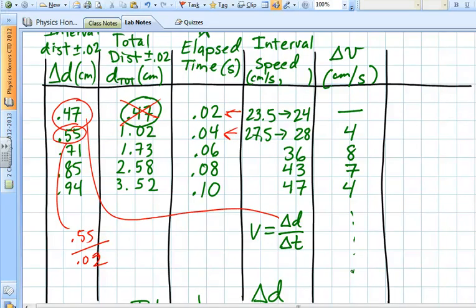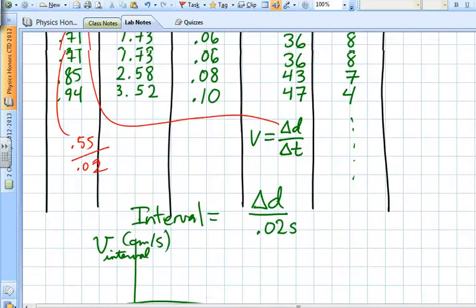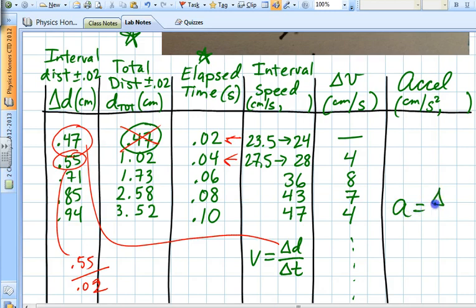And then the final column is where we're going to calculate the acceleration, and that's going to be in centimeters per second squared. We'll talk about uncertainty for that in a moment. To find the acceleration, we know that we have to do a change in speed divided by how much time occurs. So for example, we don't get any number for the first one, but the second one would be 4 centimeters per second divided by 0.02 seconds, and I think that's 200. The next one would be 400, and the next one would be 350, and then back to 200. And that's how we would calculate accelerations. We're not going to be graphing the acceleration right away.